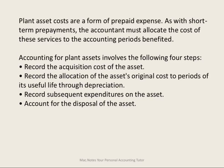Plant assets are former prepaid expenses, and when we account for them, there are four stages. First of all, we must account for the acquiring of that asset. Then we must account for how we allocate the cost of that asset over its useful life. And then if there are any subsequent expenditures to increase the life of that asset, we must account for that. And finally, how do we get rid of that asset?